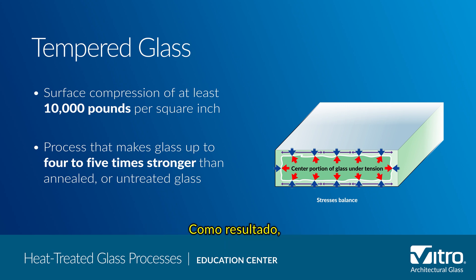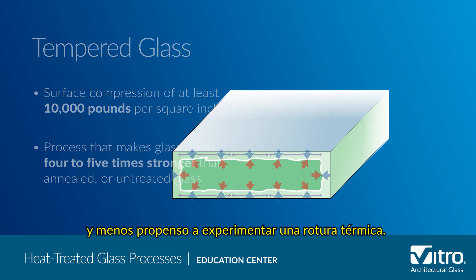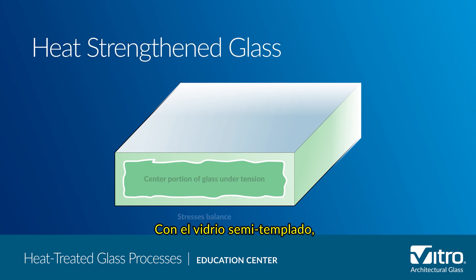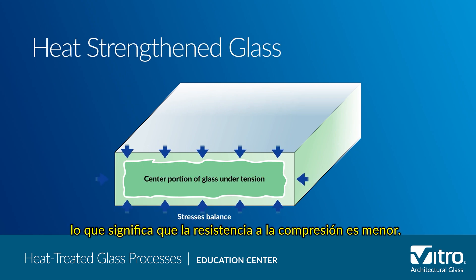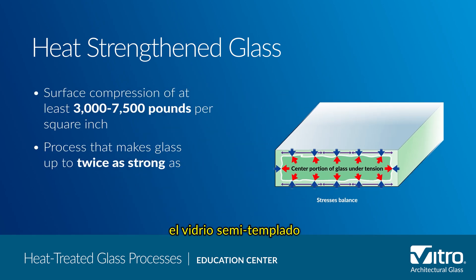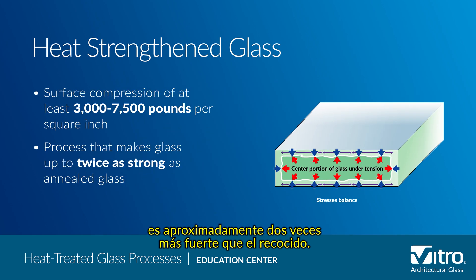As a result, tempered glass is safer and less likely to experience a thermal break. With heat strengthened glass, the cooling process is slower, which means the compression strength is lower. As a result, heat strengthened glass is approximately twice as strong as annealed glass.